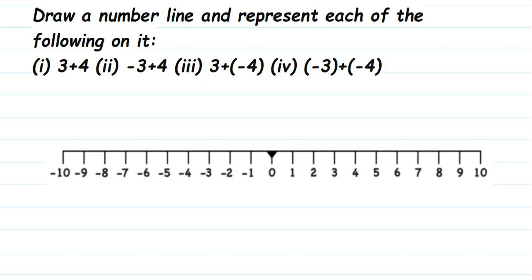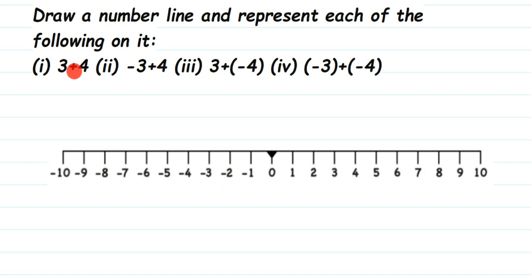Hey everyone, here's a question on number line. The question is: draw a number line and represent each of the following on it. We have four questions. On the right side we have positive numbers, on the left side we have negative numbers. Whenever you're adding a positive number, you move towards the right side.